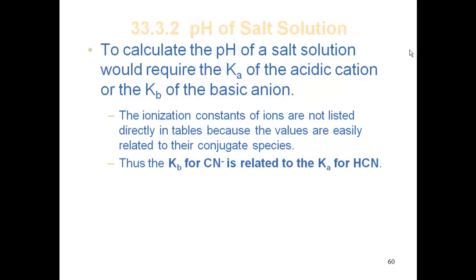The Kb of CN- is related to the Ka of HCN. If I know the hydrogen cyanide Ka value, I can get to the Kb of that cyanide ion from that acid-base conjugate pair. Most of your tables are basically written as molecular species, so any time I'm dealing with an ion, I'm going to have to calculate the Ka to be able to work my problem.